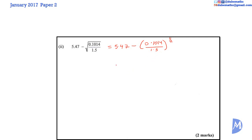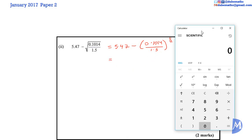This is equal to 0.1014 divided by 1.5, which equals 0.0676. So we have 5.47 minus the square root of 0.0676.